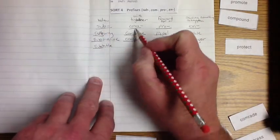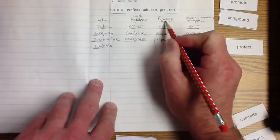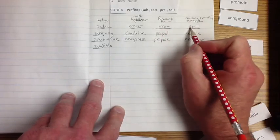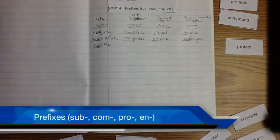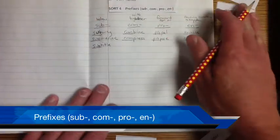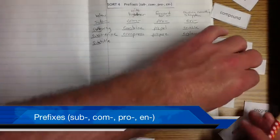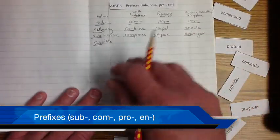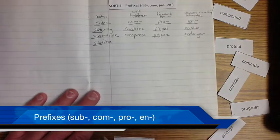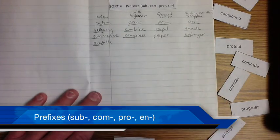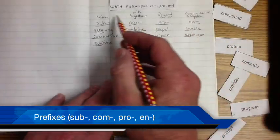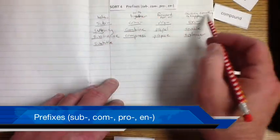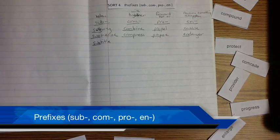Sub means below. Com means together. Pro means forward. En means causing something to happen. So what I need you to do is I need you to take the rest of the words that we have around here, and I need you to say them and write them out and kind of get an idea of what you think those words are going to mean so we can talk about them. Find out what you think some of these other words are meaning from the prefixes that are on them. Get your work done. See ya. Bye.